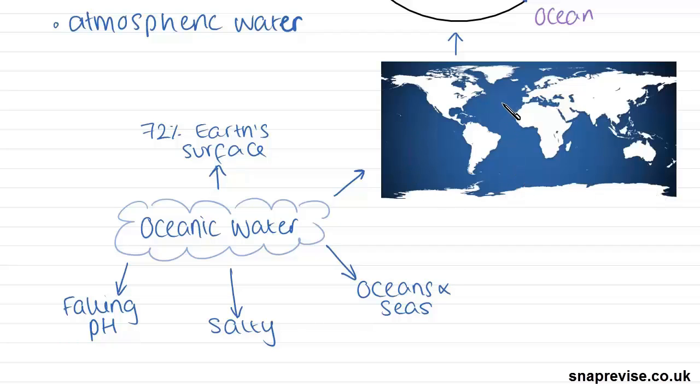The blue represents all the Earth's oceans and seas, and as you can see, it constitutes a very large proportion of the Earth's total surface. And oceanic water is broken up into oceans and seas. For example, an example of an ocean would be the Pacific, whilst seas are smaller versions of oceans, such as the North Sea.